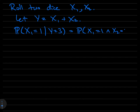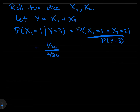What is the probability that X1 equals one and X2 equals two? There's one such outcome in the sample space, so that's one out of 36. The probability that the sum equals three — there are two ways to do that: one-two and two-one — so that's two out of 36. That quotient gives us one-half.